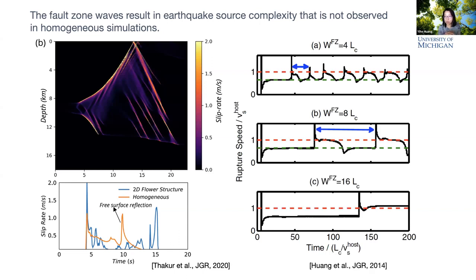Head waves from fault zones also affect rupture speed. In rupture simulations, for a narrow fault zone the rupture speed oscillates between the shear wave speed of the host rock and the Rayleigh wave speed of the fault zone, correlated with arrivals of fault zone head waves. As fault damage zones get wider, we also observe super-shear rupture speed transitions — a permanent super-shear transition slightly above the shear wave speed of the host rock.